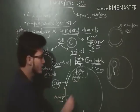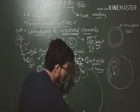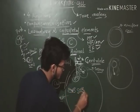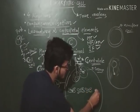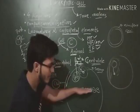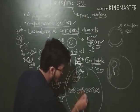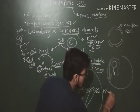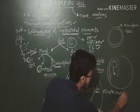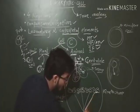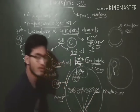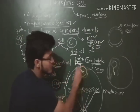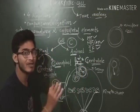We will talk about centrioles in detail later. The centriole is important for the cell division process, and centrioles are present in animal cells only.